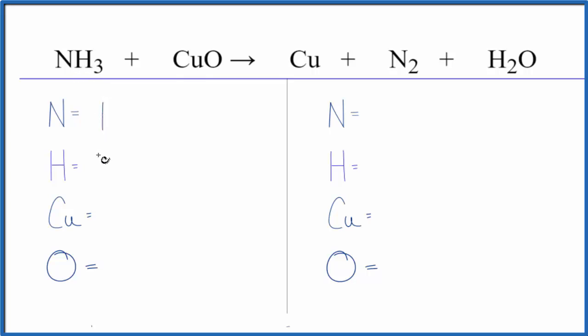One nitrogen, three hydrogens, one copper, and one oxygen. On the product side, we have nitrogen 2, two hydrogens, and then one copper and one oxygen.